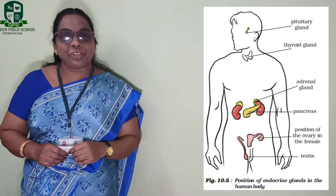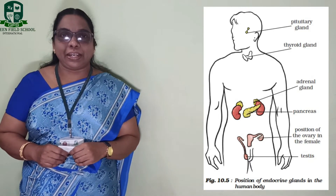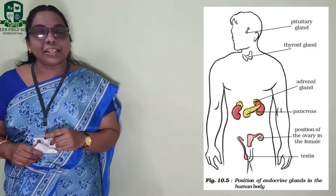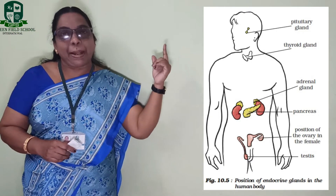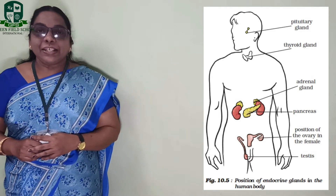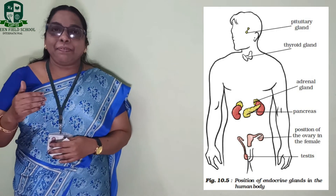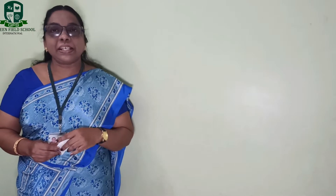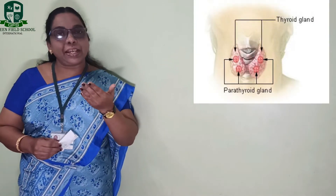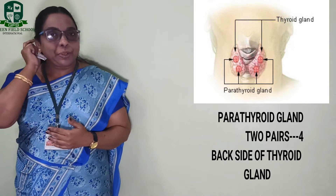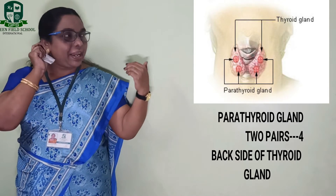Out of these eight glands, we already completed the first two: pituitary and thyroid gland. Today's class we are going to study about the third gland, that is the parathyroid gland. The parathyroid gland is present near the neck region, or we can say on the back side of the thyroid gland.